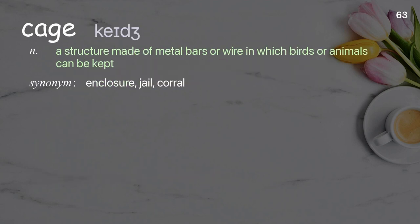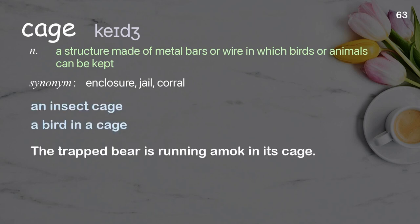Cage. A structure made of metal bars or wire in which birds or animals can be kept. Examples: an insect cage, a bird in a cage. The trapped bear is running amok in its cage.